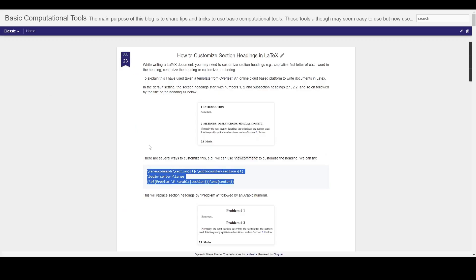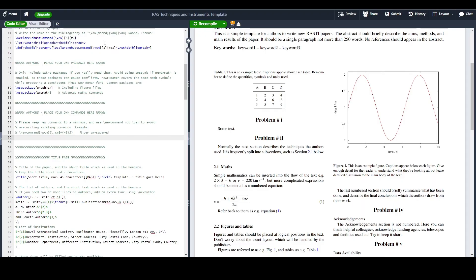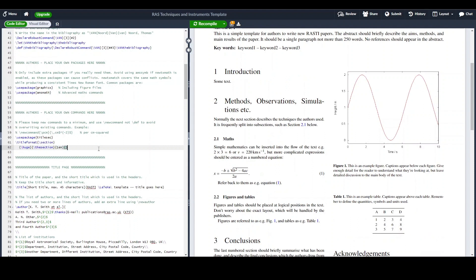So we can take this example and replace this with this title sec package. And now you can see that again, we have the same section headings. But now we have, we've specified the size of the text as huge. We can even make it larger, the size of the section headings here.